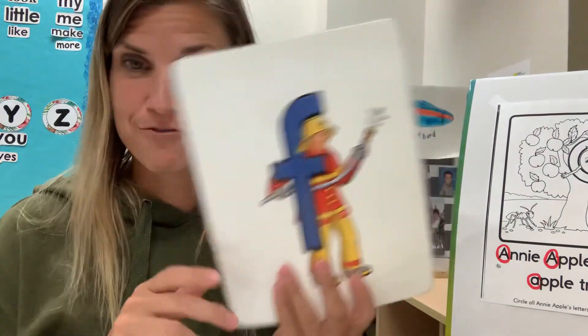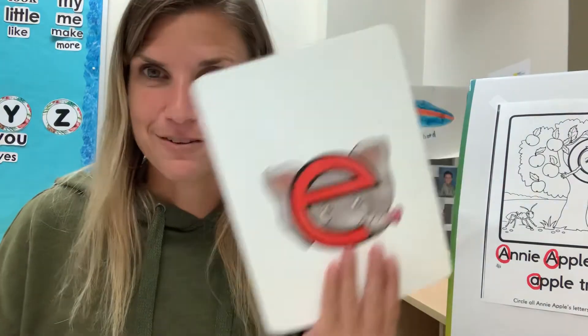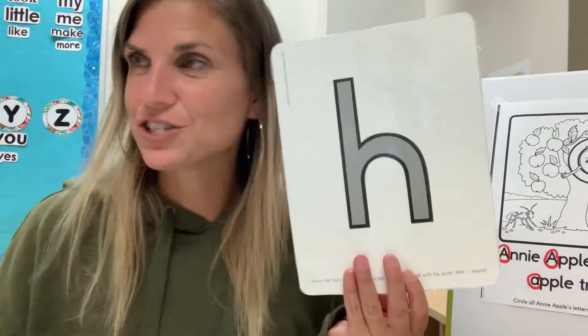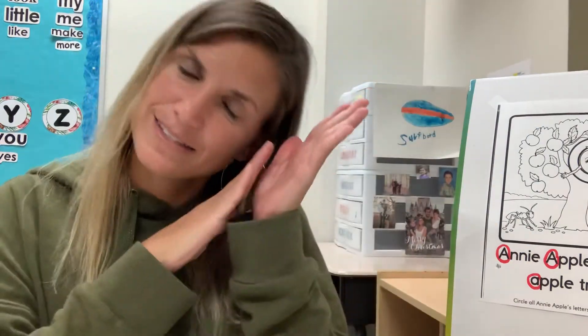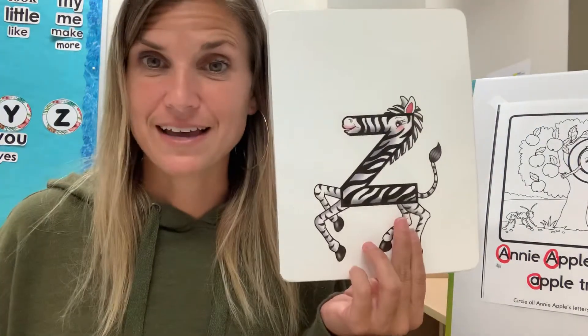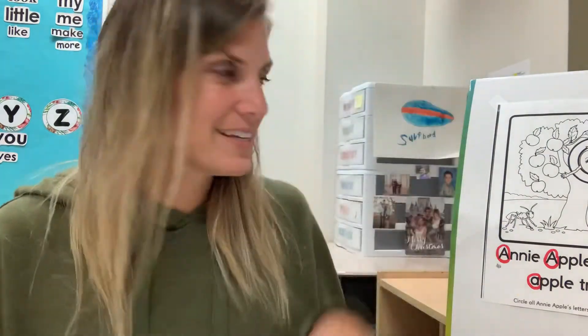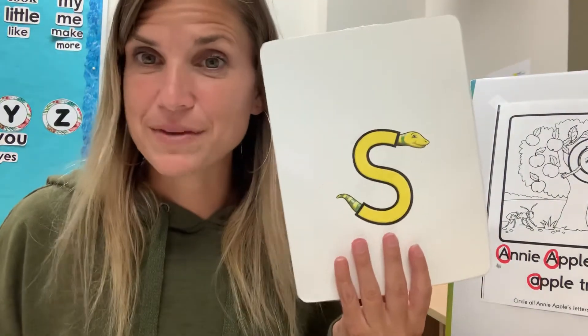F — firefighter Fred. A, a, a, a — Annie Apple, just like the one we circled! E — Eddie Elephant. H, h — hairy hat man. O — Oscar Orange. Z, z — zigzag zebra. S, s, s — Sammy Snake.